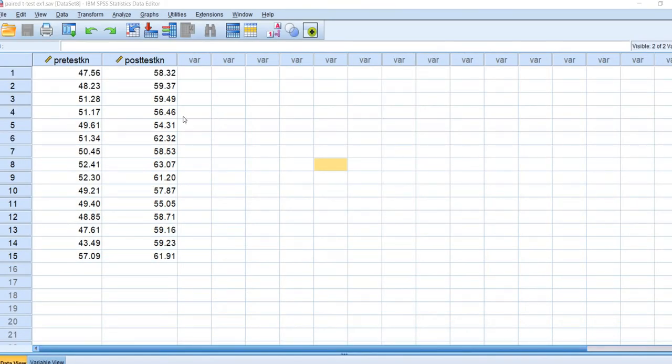Here we have our data opened up. We have two variables in our data set: a variable reflecting pre-test knowledge and a variable reflecting post-test knowledge. You'll see that each row contains a student's scores at pre-test and post-test.